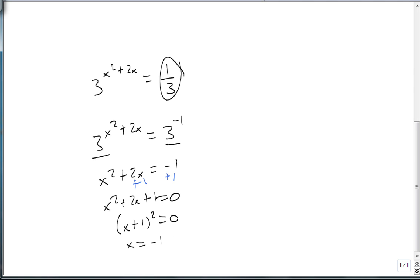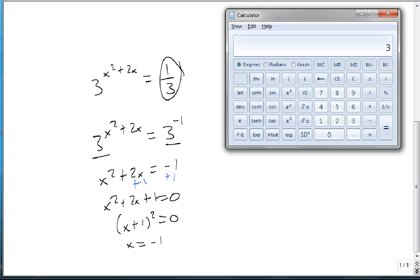To check that on our calculator, 3 raised to the minus 1 squared plus 2 times minus 1 close parenthesis equals 1 third. So we get 1 third on both sides, and we know that our minus 1 works.